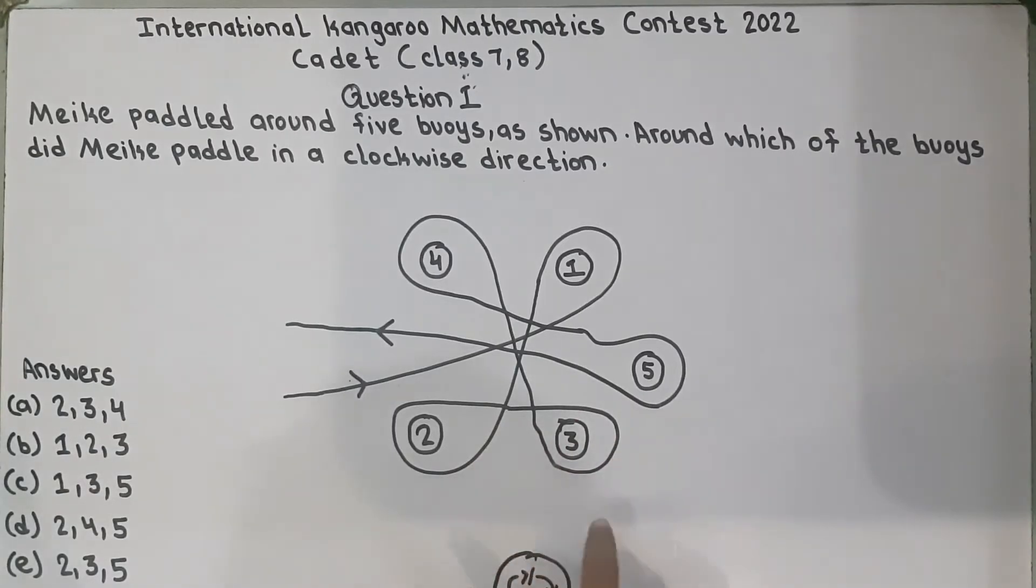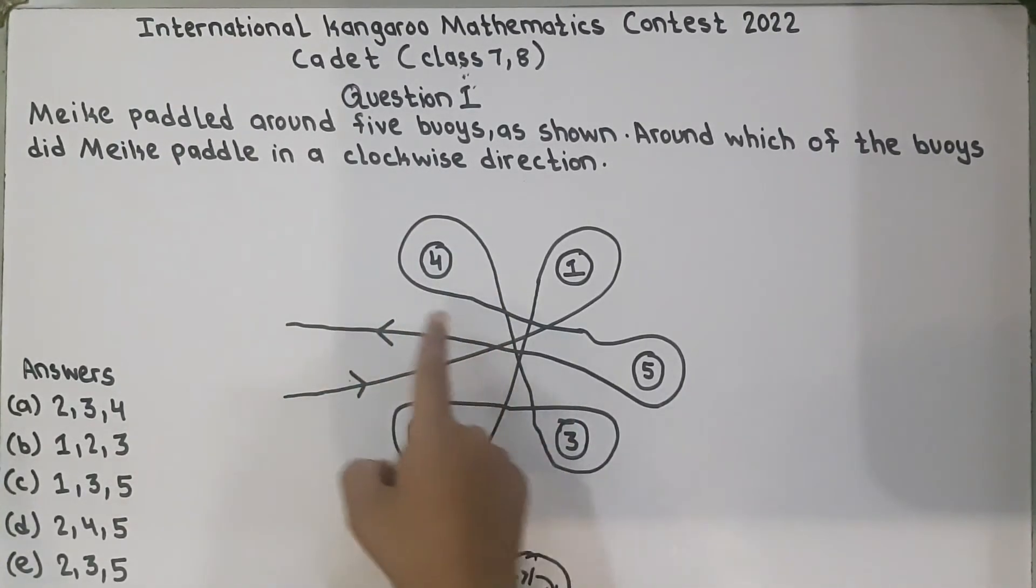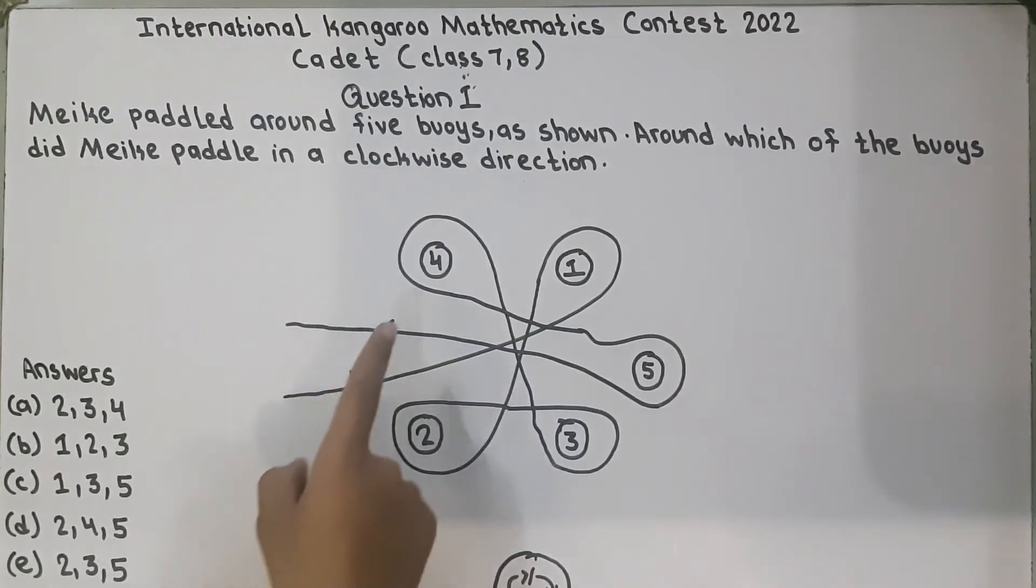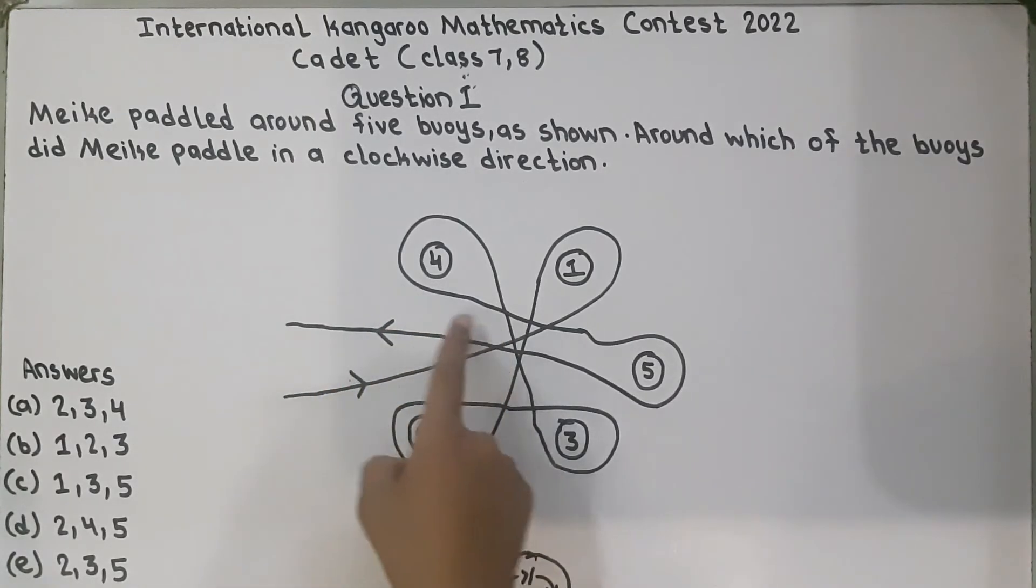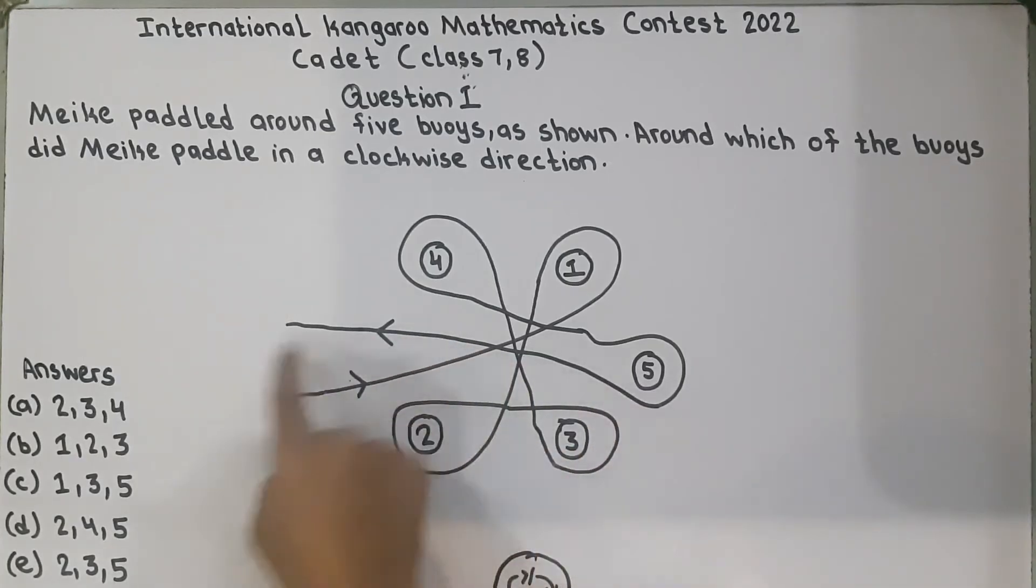And when this line goes there, he went on 4 and again he goes anti-clockwise and when he comes, this line comes here and around the 5, he moved like clockwise and came out of here.